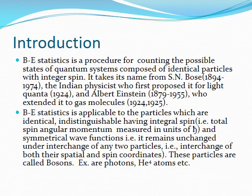Bose-Einstein statistics is a procedure for counting the possible states of quantum systems composed of identical particles with integer spin. It takes its name from S.N. Bose, the Indian physicist who first proposed it for light quanta in 1924, and Albert Einstein who extended it to gas molecules in 1924-25.